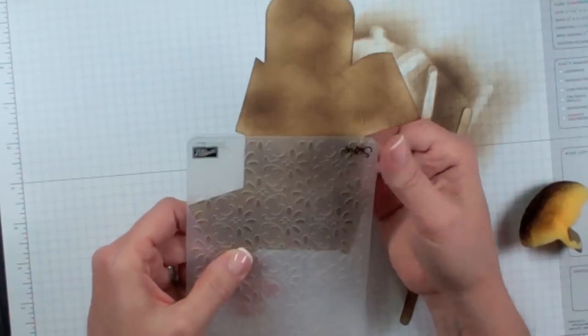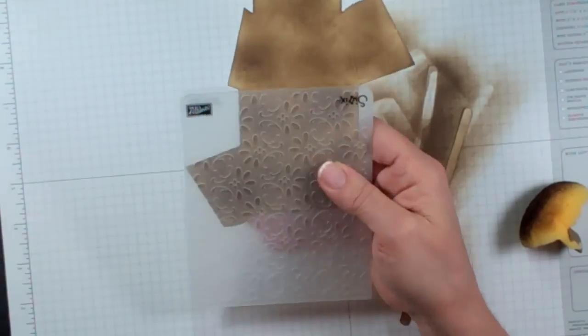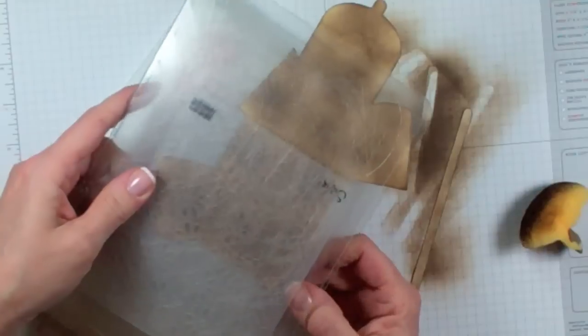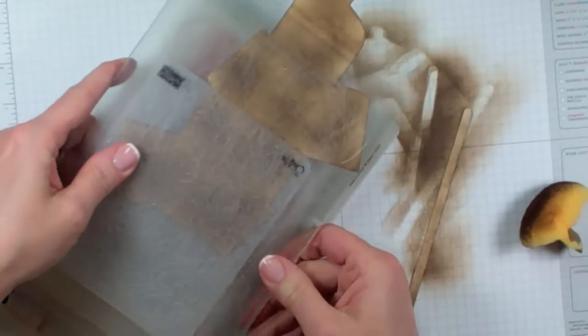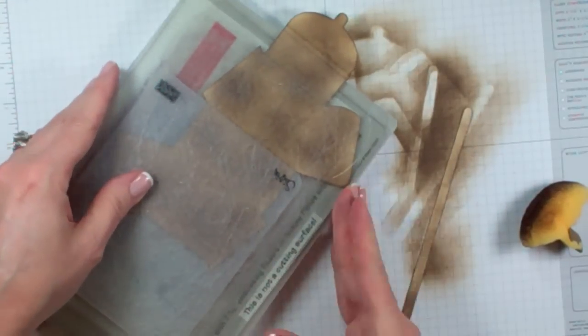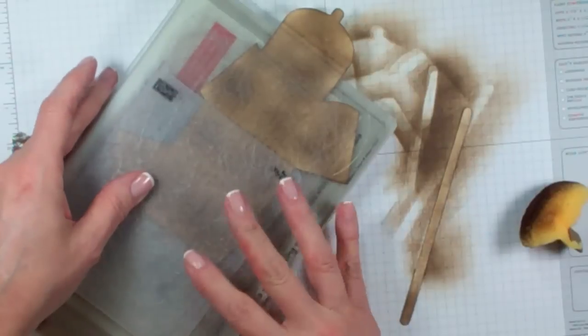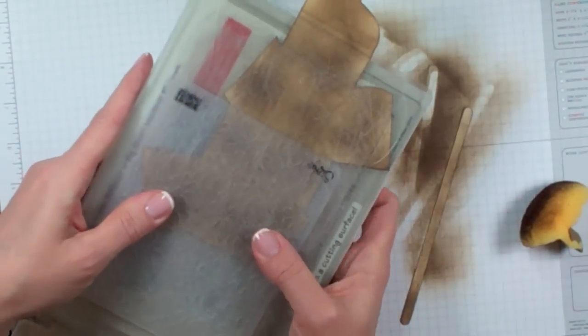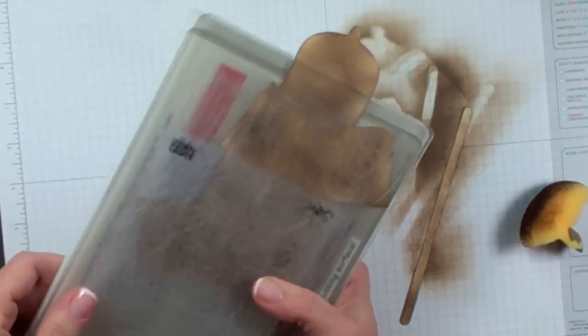I'll put that in there and sandwich it in. Make a sandwich with my cutting plates. Then I'm going to use my multi-purpose platform open completely. You can also do it on tab one, but I like to do my impression folders on tab one. Make certain that it's not sticking out the side of your sandwich because then it's going to damage the paper. Take this whole sandwich and run it right through the Big Shot.